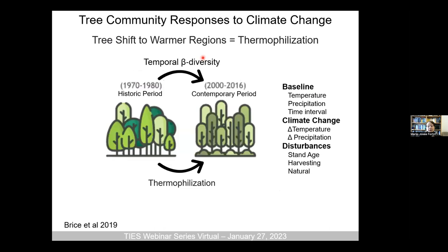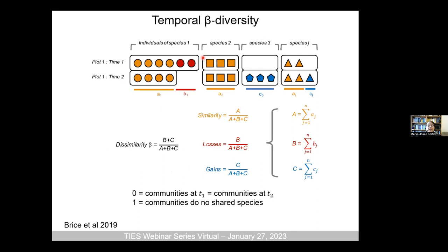The goal is to detect change in species composition while controlling for the baseline temperature, precipitation, and the interval time between each plot resampling — which varied in frequency. We then look at the impact of changes in temperature, changes in precipitation, stand age, intensity of harvesting, intensity of disturbance (mostly fire), using a beta diversity index through time.